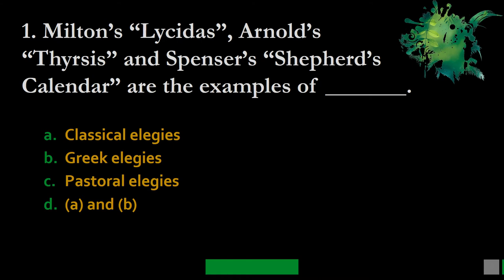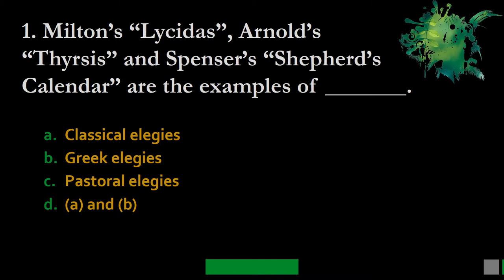Question 1: Milton's Lycidas, Arnold's Thyrsis, and Spenser's Shepheardes Calender are examples of — A. Classical elegies, B. Greek elegies, C. Pastoral elegies, D. A and B. Please choose the correct option. The correct answer is C — all these are pastoral elegies.